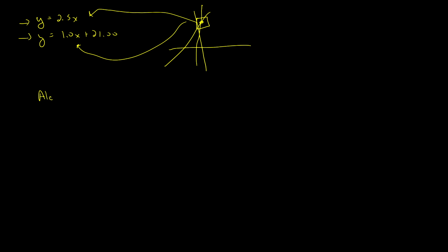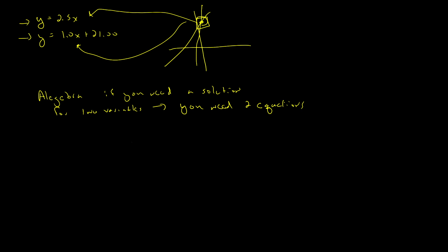In algebra, we have a rule: if you need a solution where it's a solution for two variables, then you need two equations. Three variables, you need three, and four, and so on. The more variables you have, the larger your system of equations has to be to get a unique solution — some place where there is one answer that solves both. We're going to look at systems of equations in two variables and work on ways of solving them.